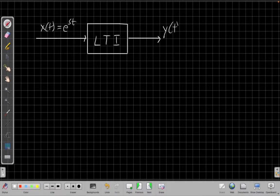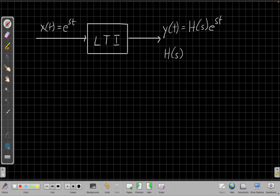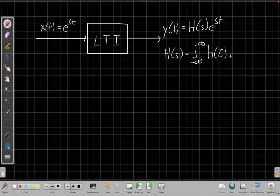that the output of this system will always be the same e to the st scaled by a gain or a constant that depends on s. And again, that h(s) is this integral of the impulse response. So there's a one-to-one mapping between the impulse response h(t) and the system function h(s).